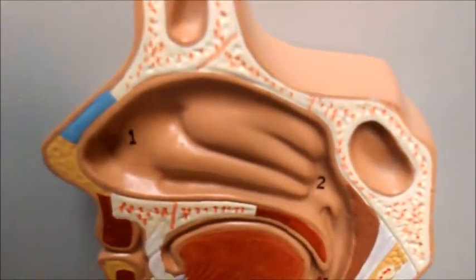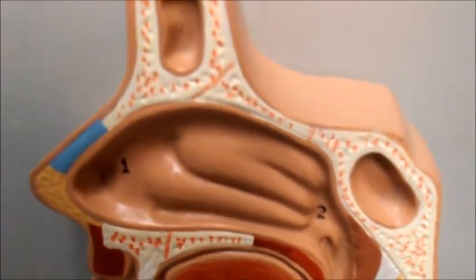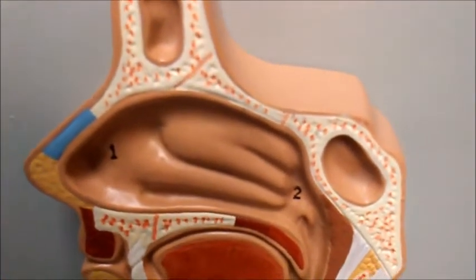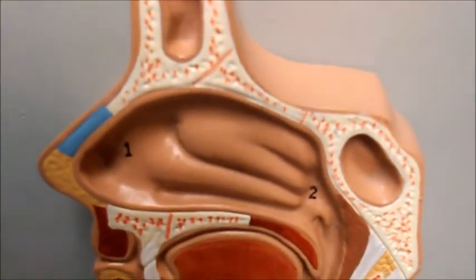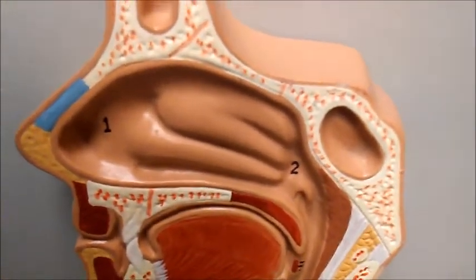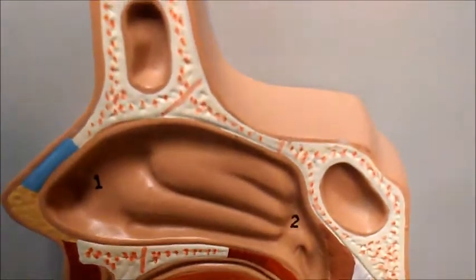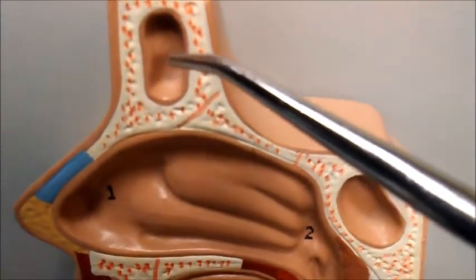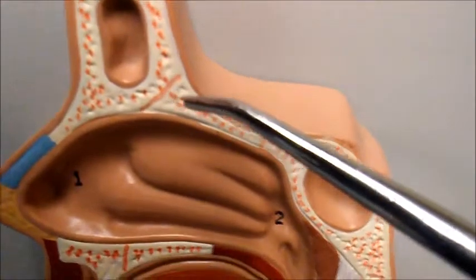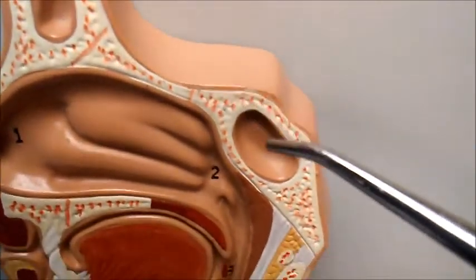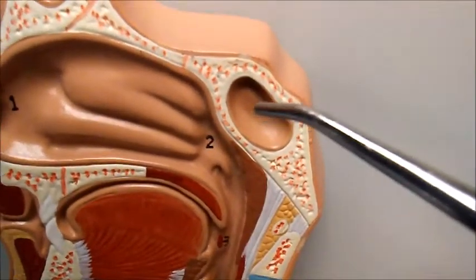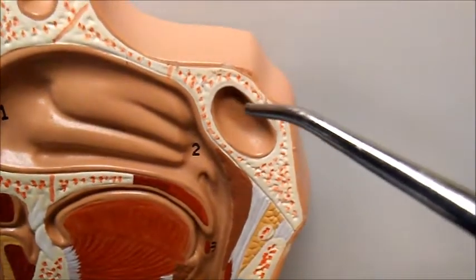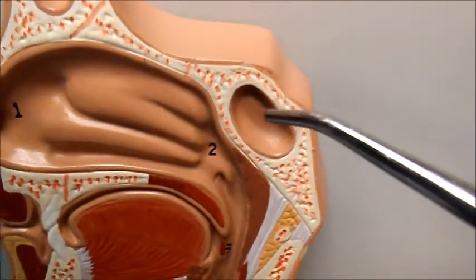Associated with the nasal passages we also see two of the paranasal sinuses. We have the frontal sinus in the frontal bone and we also have the sphenoid sinus associated with the sphenoid bone.